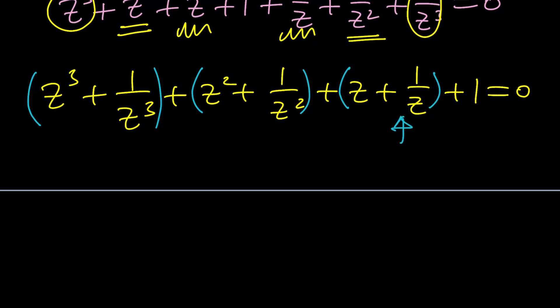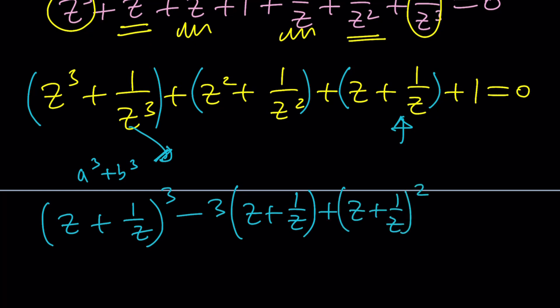For example, if you remember the formula for A cubed plus B cubed, Z cubed plus 1 over Z cubed can be written as Z plus 1 over Z cubed, and from that I need to subtract 3AB times A plus B. But AB or Z times 1 over Z is 1. So it's just going to be 3 times Z plus 1 over Z, which is another identity for this sum.